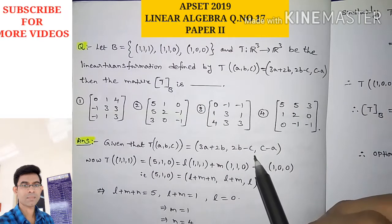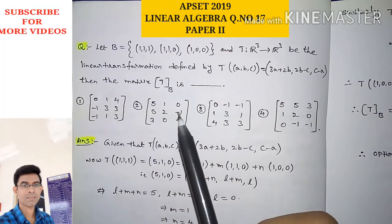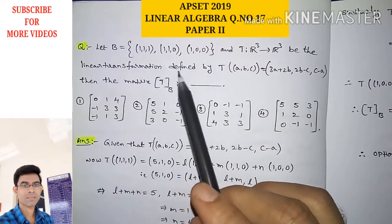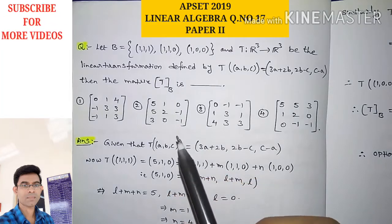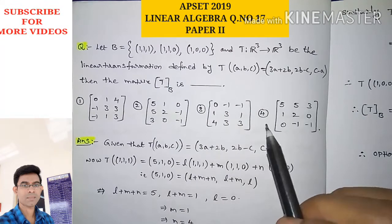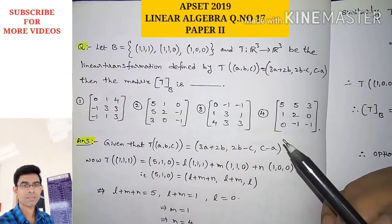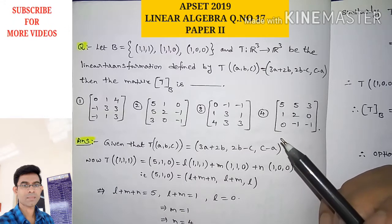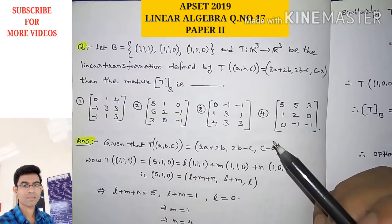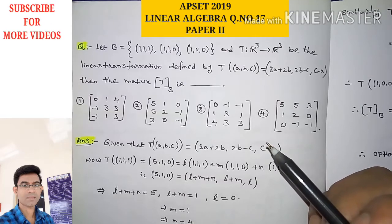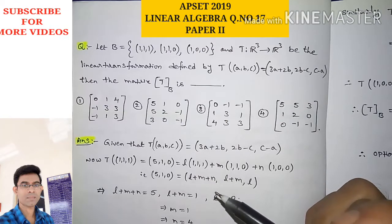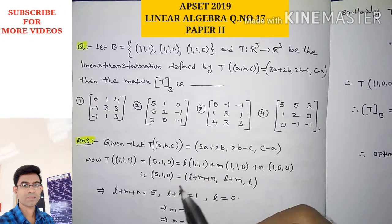We have to choose one correct option from these four. The question asks us to find the matrix representation of the given linear transformation with respect to basis B. This concept was already discussed in the video for episode 2018 linear algebra question number 18, which is available in the linear algebra playlist. The link is available in the description of this video.